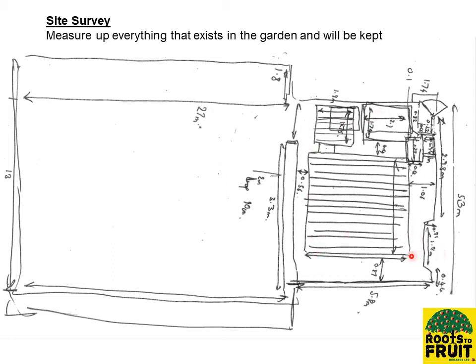For a tiny garden, these are all the existing features that exist. When you do your site survey, everything that's going to be kept needs to be measured and plotted. It doesn't have to be to scale — just draw a rough idea of what you think its shape is. I knew this was the bay window, this is the gate to get in, this is the kitchen door, this was my deck. Everything was therefore measured, and this is what you will then do your scale drawing from.